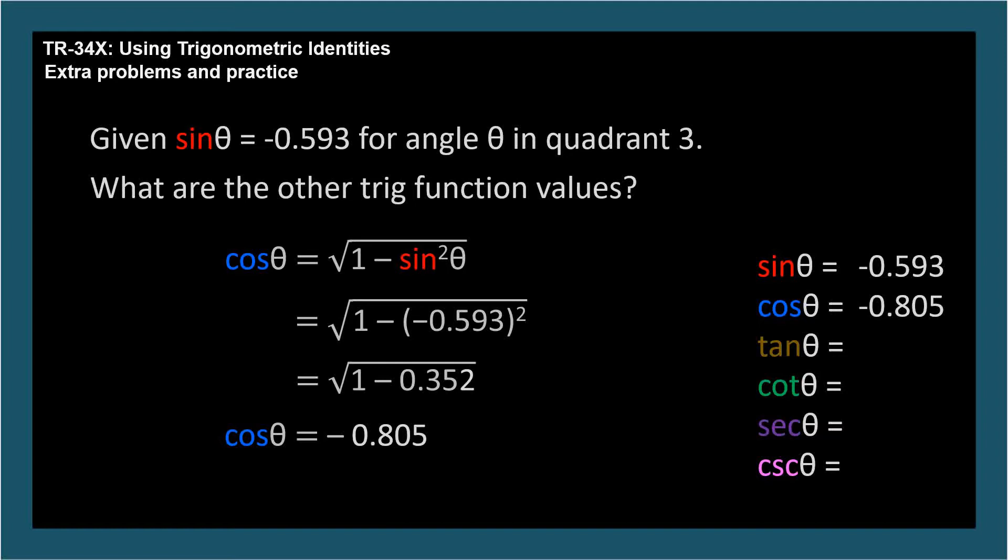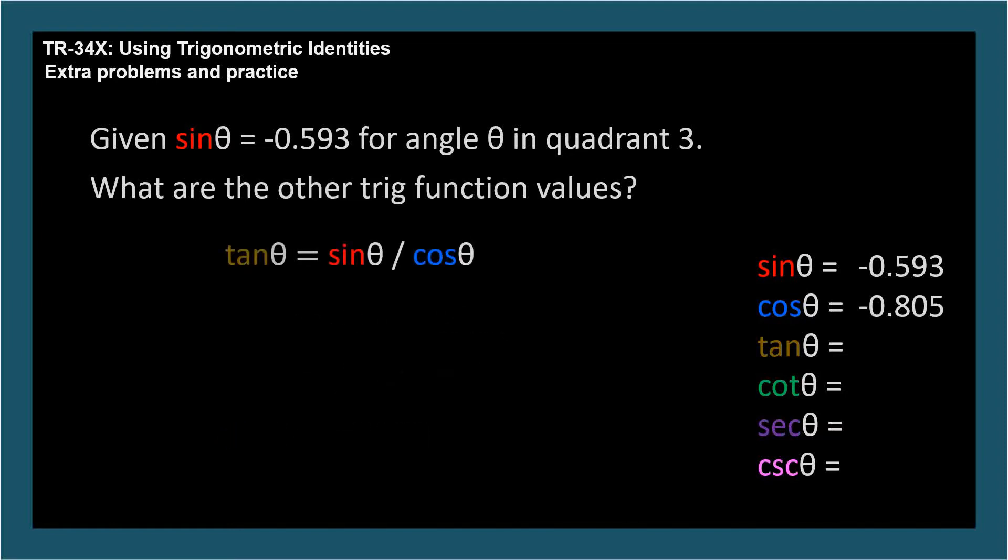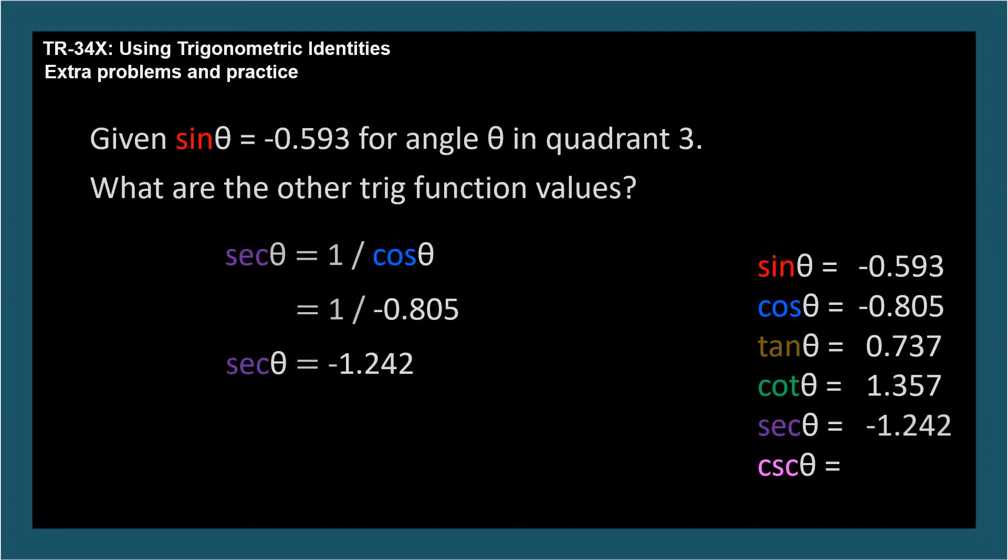Now that we know the cosine and sine, the others should be simple. Tangent is sine over cosine. It's positive since the cosine and sine are both negative, 0.737. Cotangent is cosine over sine, again positive, 1.357. Secant and cosecant are reciprocals of cosine and sine respectively. They'll both be negative since the cosine and sine are negative. I'm going through these quickly because they're so simple.